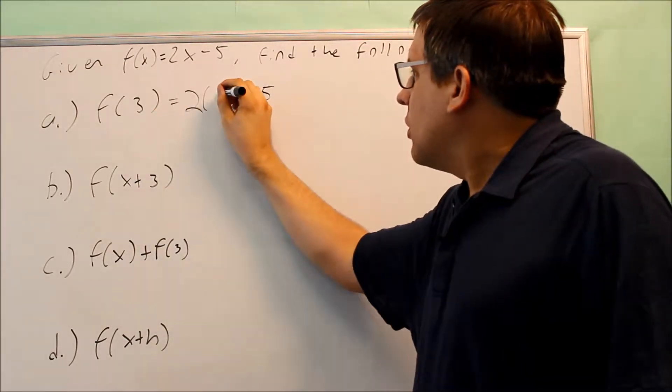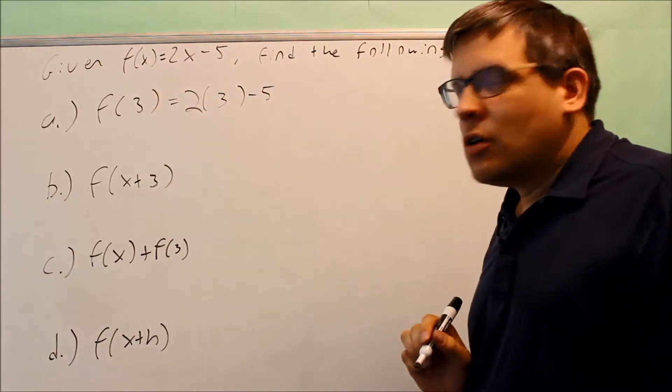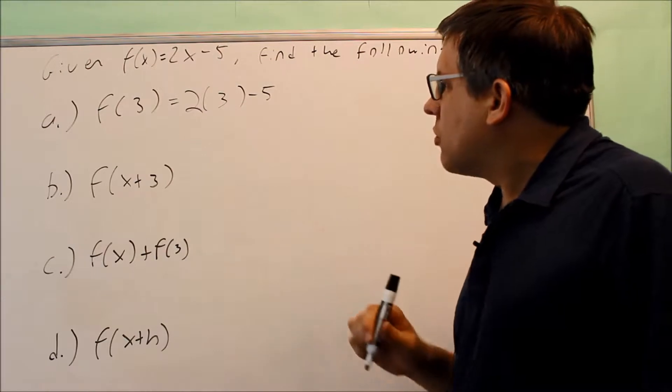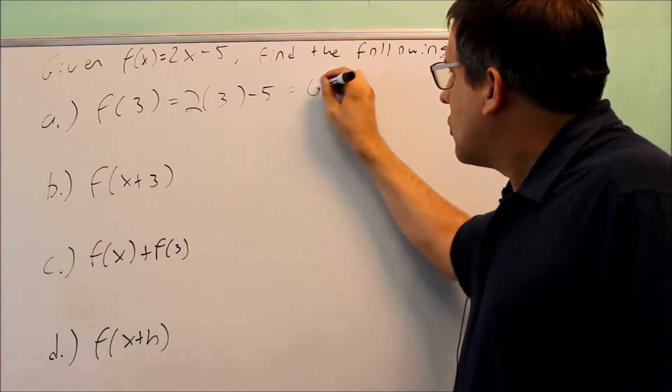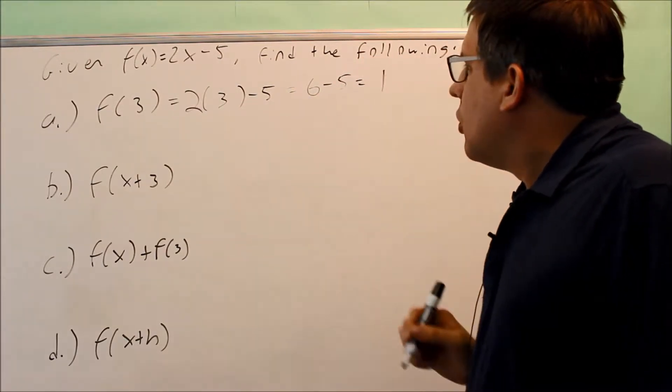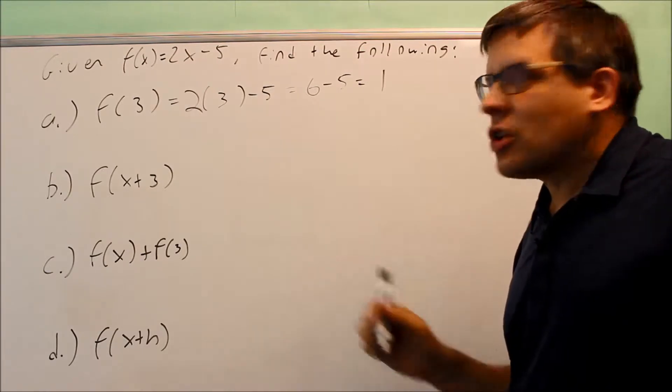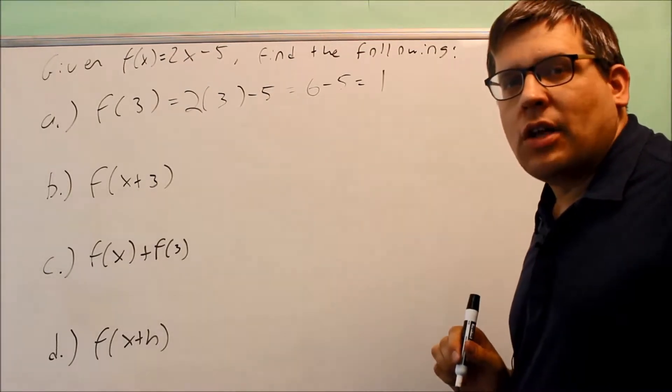Whatever is inside this parenthesis is going to get written inside that one. So this is 2 times 3 minus 5. That's 6 minus 5, or 1. So f(3) is going to be equal to 1. That's the answer.